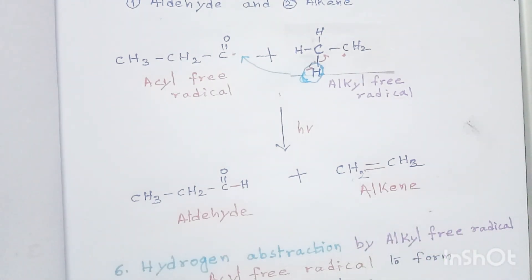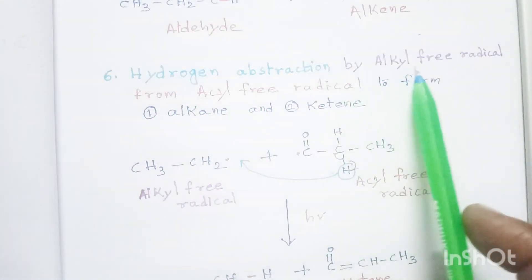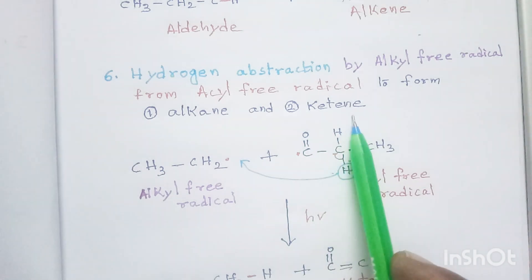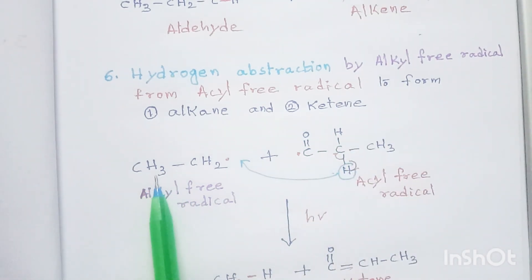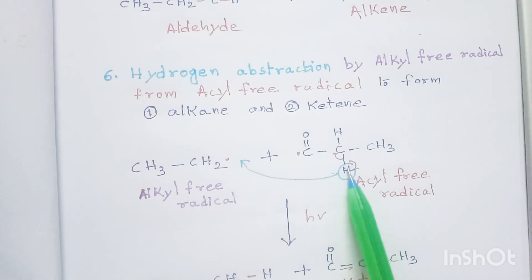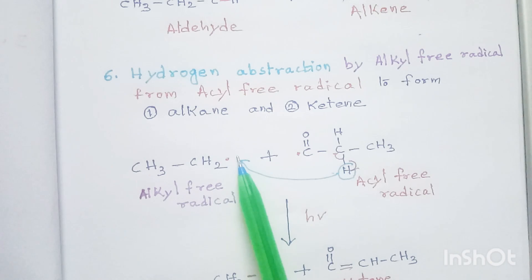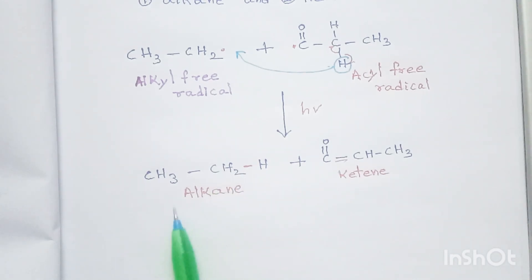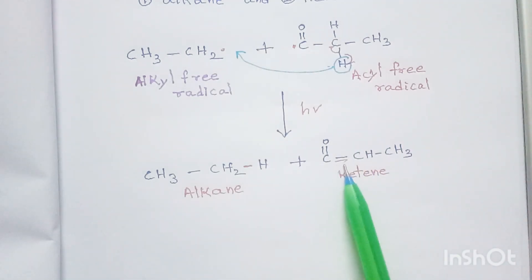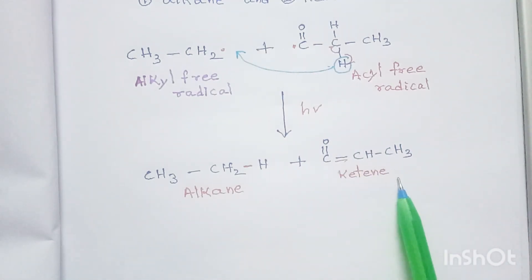Hydrogen abstraction by an alkyl free radical from an acyl free radical gives an alkane and a ketene. The alkyl free radical CH3-CH2 abstracts a hydrogen from the acyl free radical, giving CH3-CH3 (an alkane). The remaining radicals form a new bond giving a ketene. These are the secondary process reactions of carbonyl compounds in Norrish type 1 reactions.